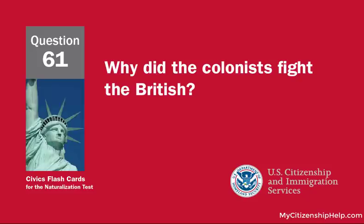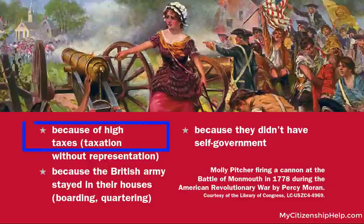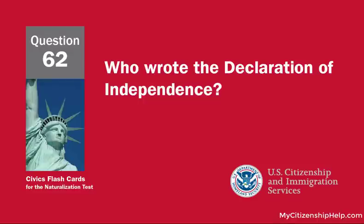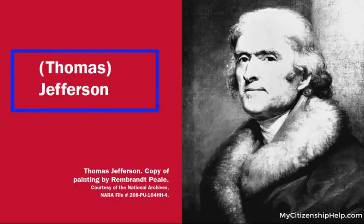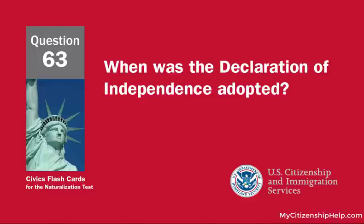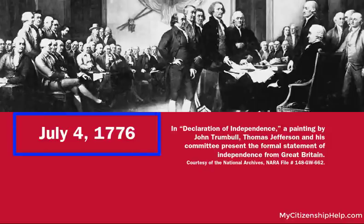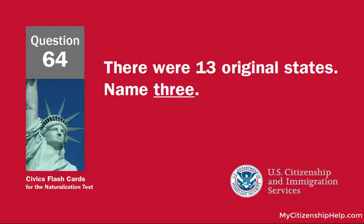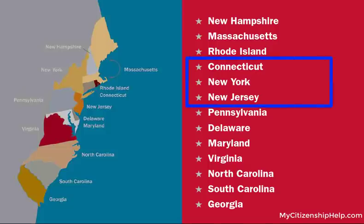Why did the colonists fight the British? Because of high taxes. Who wrote the Declaration of Independence? Thomas Jefferson. When was the Declaration of Independence adopted? July 4, 1776. There were 13 original states. Name three: Connecticut, New York, and New Jersey.